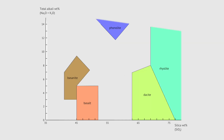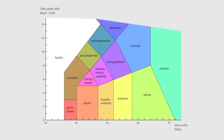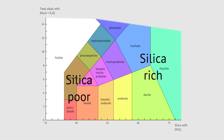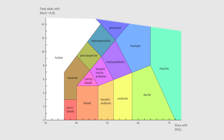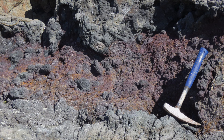In between those end members, many more rock types can be identified. They cover a spectrum from silica-poor to silica-rich, or from alkaline down to sub-alkaline. Thanks to the TAS scheme, it's possible to measure just a few components of a volcanic rock and immediately see what it is.